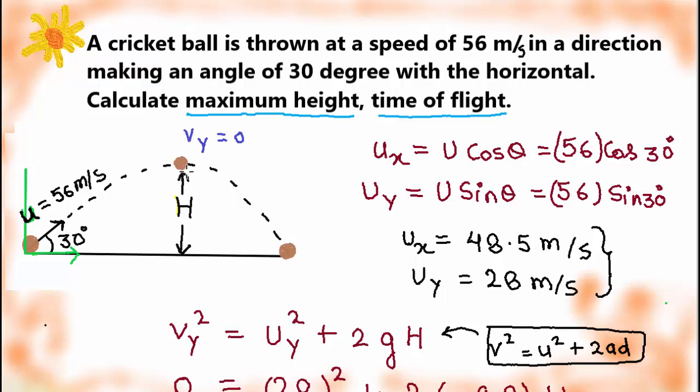Now how will we find this maximum height? So for that, first of all, we need to break this velocity vector into horizontal component Ux and also the vertical component Uy. So horizontal means like this. This vector is horizontal vector. This one is the vertical velocity vector. So we need to use the formula U cos theta for horizontal velocity vector and U sin theta for vertical velocity vector. Plugin values 56 cos theta and 56 sin theta. Once you calculate these values, you will get Ux equals 48.5 meter per second. Then Uy equals 28 meter per second.